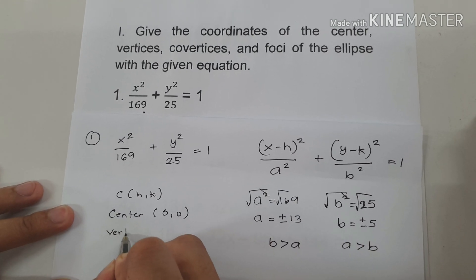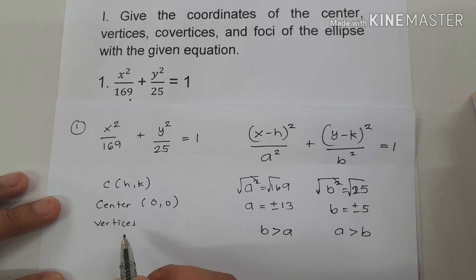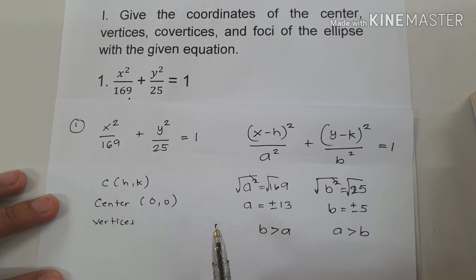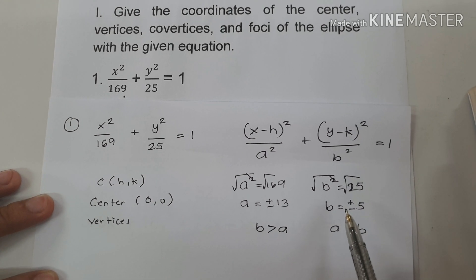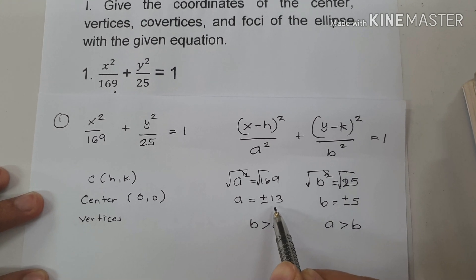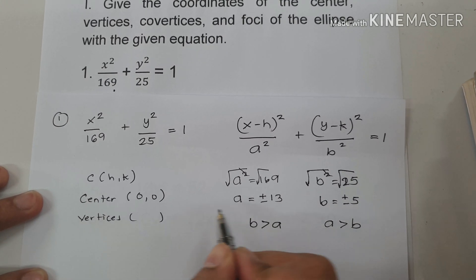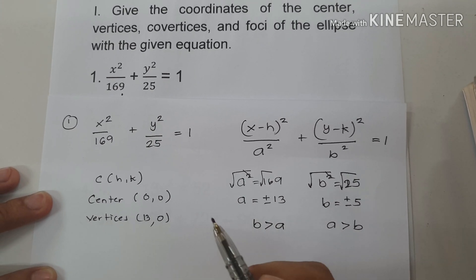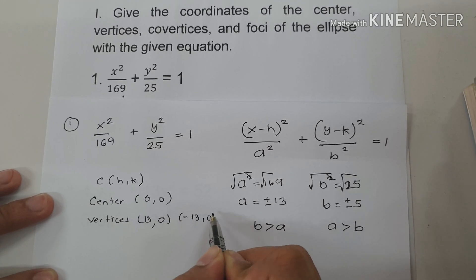Now let's find the vertices. Vertices are always on the major axis. Since the value of a is greater than the value of b, our ellipse is horizontally oriented. Whenever we have a horizontally oriented ellipse, we add the value of a — positive and negative 13 — to the value of h. So the vertices are (13, 0) and (negative 13, 0).